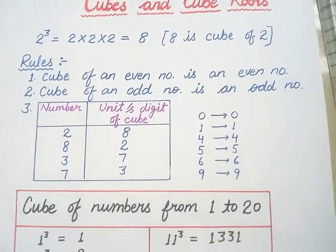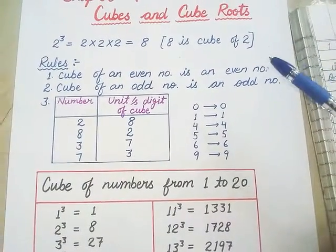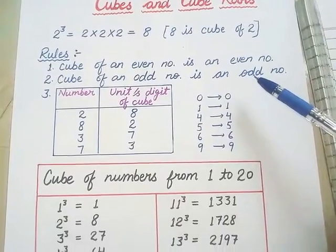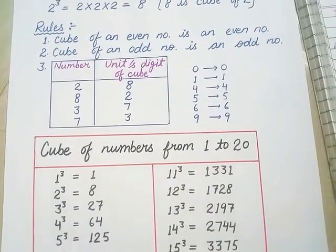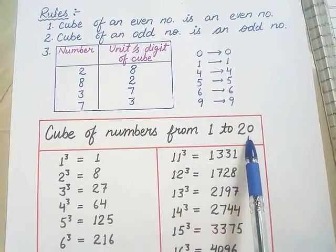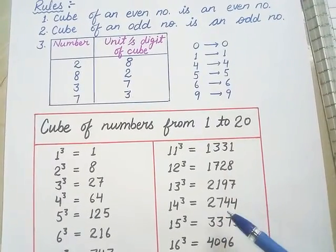Next students, you have to do homework in your fair notebook. First of all, you have to write the rules and then you have to find out the cube from 1 to 20. You have to write and learn.